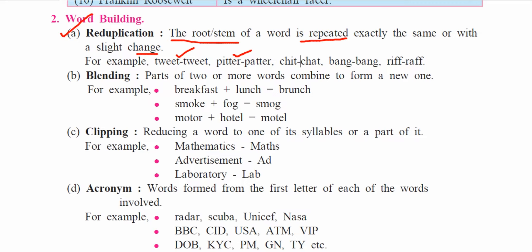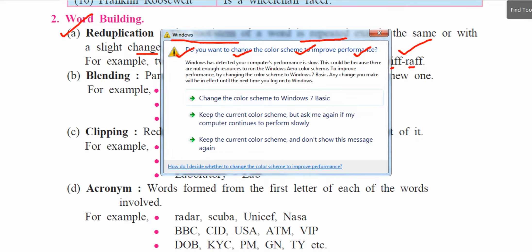Examples of reduplication are: tweet-tweet, pitter-patter, chit-chat, bang-bang, and riff-raff. You can see both exact reduplication and partial reduplication. In riff-raff, only the vowel changes — 'i' and 'a' are both vowels. This is a change in vowel only, which is also a form of partial reduplication.